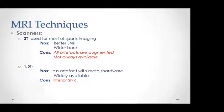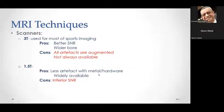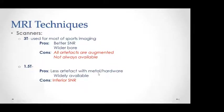The disadvantage of the 3 Tesla scanner is that all MRI artifacts are exaggerated. Because of that, having a 1.5 Tesla scanner is advantageous for patients with hardware or metal implantation — common in musculoskeletal patients — since we prefer to image these patients using the 1.5 Tesla scanner. The disadvantage of the 1.5 Tesla scanner is the inferior signal-to-noise ratio compared to 3 Tesla.